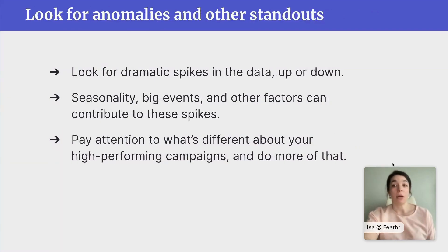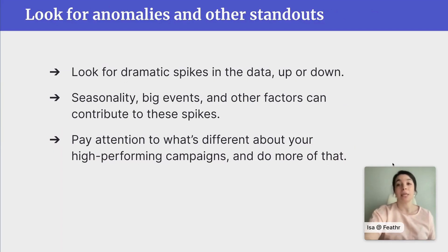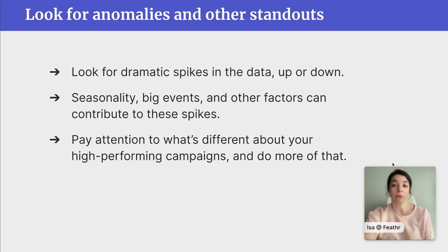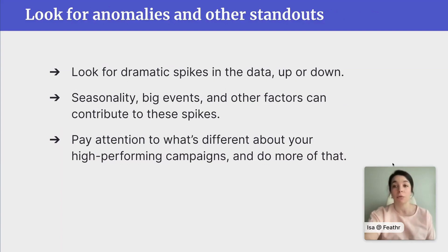Next, look for anomalies in the data or other standouts — dramatic spikes up or down. Lots of things can affect this, so keep in mind seasonality. You might see less engagement during certain parts of the year, but then really high engagement closer to Giving Tuesday or the holiday season or a big event. Or let's say one ad campaign has a much higher click-through rate than your other ad campaigns — you might want to take a look at what's different about it. Are there any trends in terms of who's engaging with it or where on the web they're seeing and clicking your ad? This type of analysis can really help you get demographic and behavioral insights that your CRM alone just can't provide. Maybe the messaging or visuals in that campaign are particularly compelling — see what it is about that campaign that's producing higher results and try applying some of that to your other campaigns.